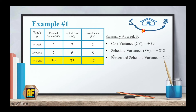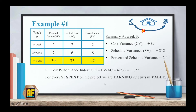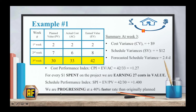I've summarized the cost variance, schedule variance, and forecasted schedule variance. Now we can calculate the cost performance index, CPI, which is earned value over actual cost: 42 over 33 equals 1.27. This means that for every dollar spent on the project, we are earning 27 cents in value, which is really good. The schedule performance index, SPI, is earned value over planned value: 42 over 30 equals 1.4, which means we are progressing at a 40% faster rate than originally planned.